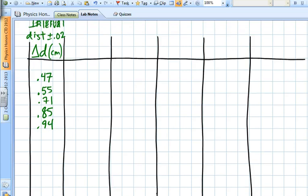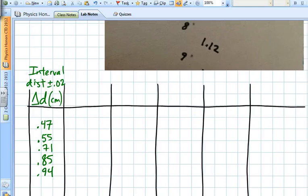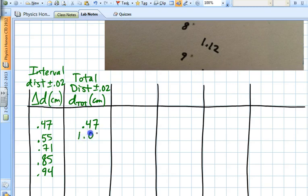So the next thing that we're going to do is, this is how far the air puck went in one short period of time, but we also want to keep track of the so-called total distance. This is d_total in centimeters with the same uncertainty, plus or minus 0.02. After the first interval it's got a total distance of 0.47, right? And the next interval, it's 0.55 plus 0.47, so I think that's 1.02. Likewise, the next one will be 1.73, then 2.58, and then the last one will be 3.52.